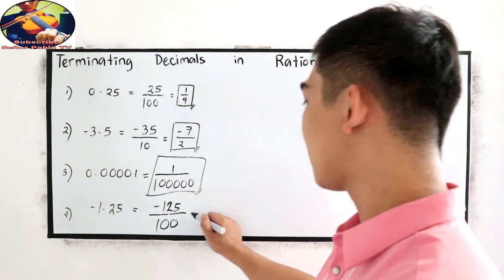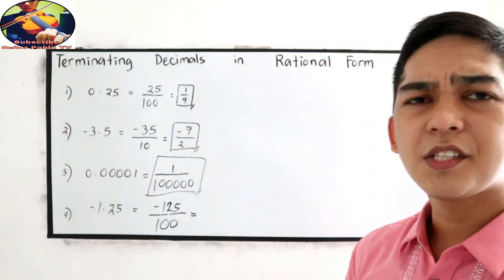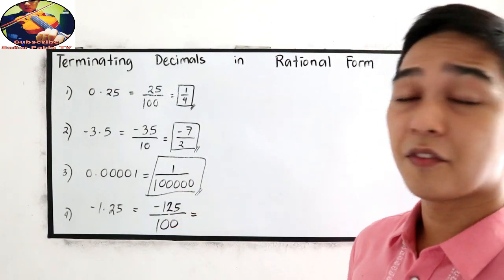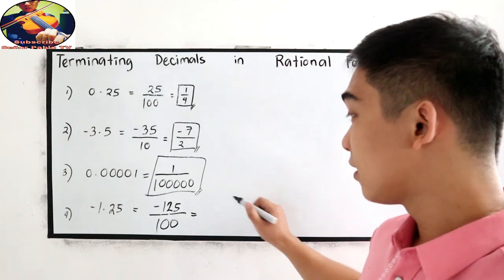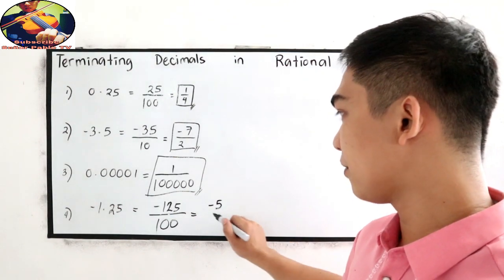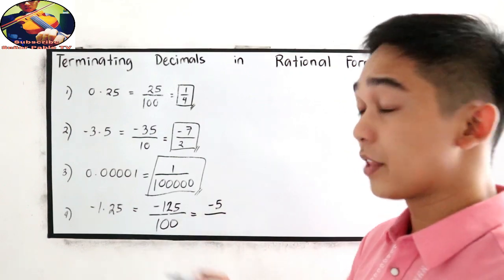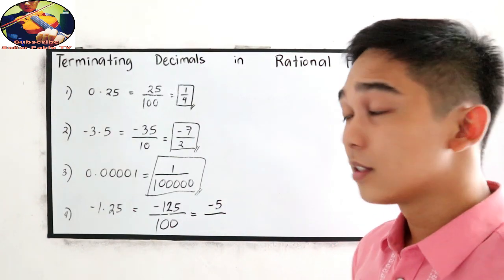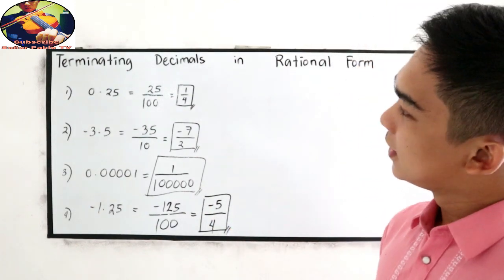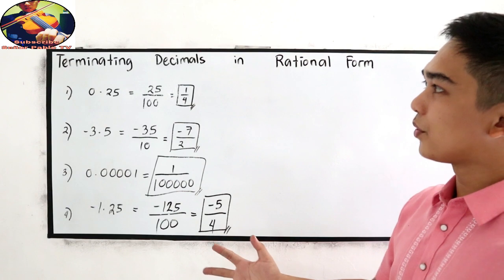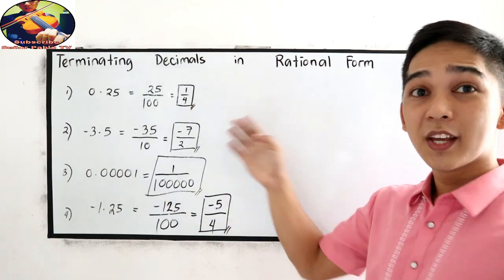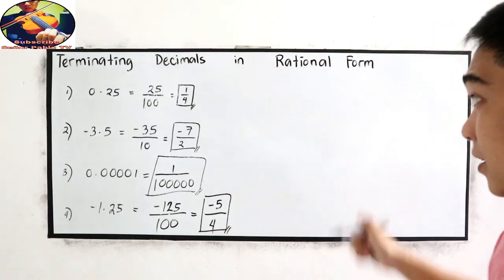And that is equal to divisible by 25. So 125 divided by 25, that is negative 5 over 100 divided by 25. Negative 5 over 4. So that is how to write terminating decimals to rational form. Now, I want you to answer the following.